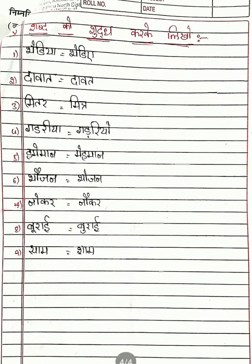Shabdon ko shuddh karke likho — that means they are given some words with spelling mistakes, how you write correct. See the first word: bhediya — they are given ya, so that is the wrong letter, the correct one is ye — bhediye. Then dawata — dawaat — that word has no meaning; dawat is the correct word, that means food. Then mitara — that word also has no meaning; the correct word is mitra, meaning friend. Then gadriya — they have the wrong vowel symbol; the correct word is gadriye.